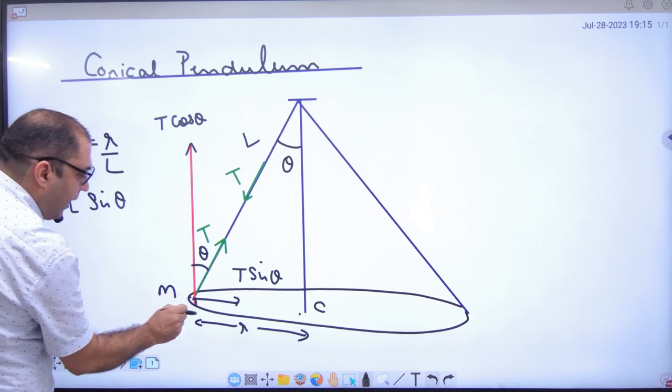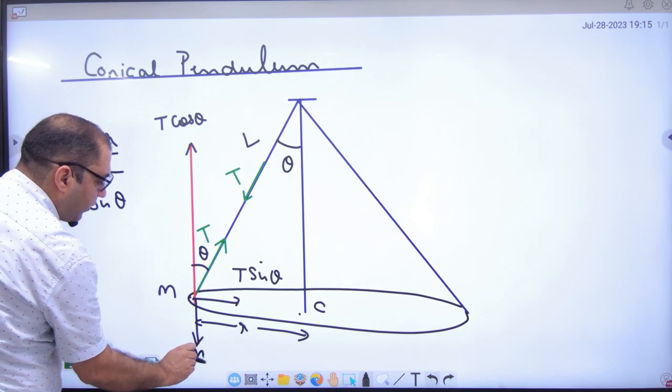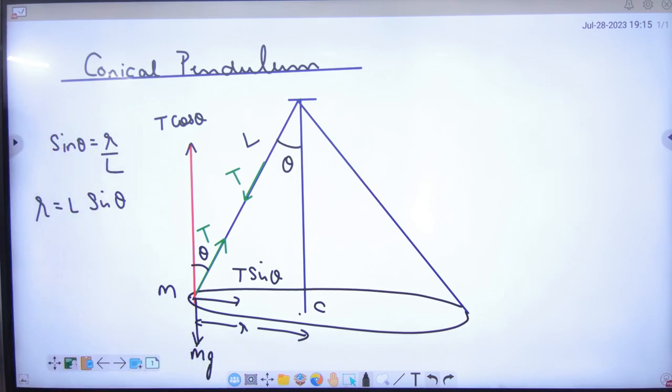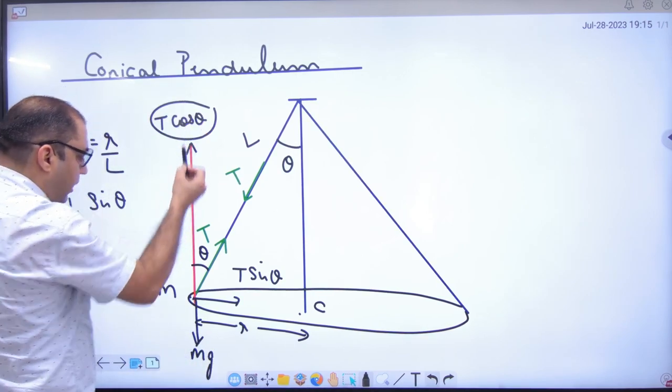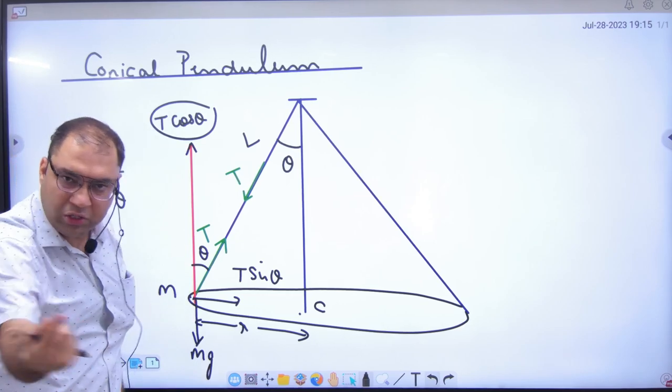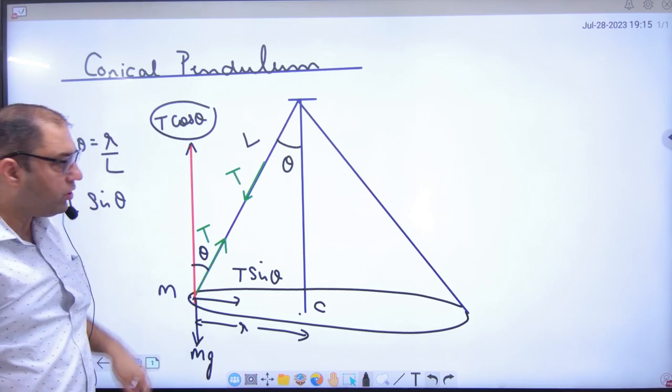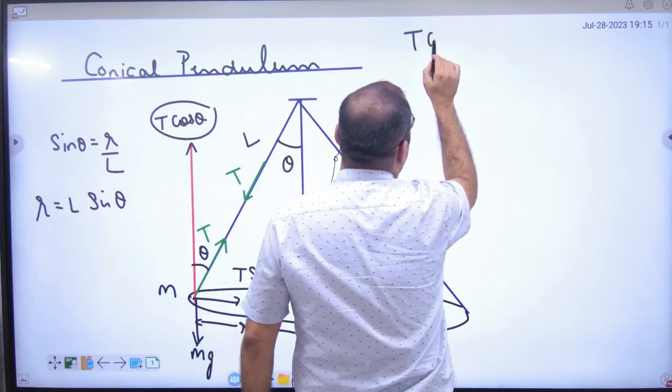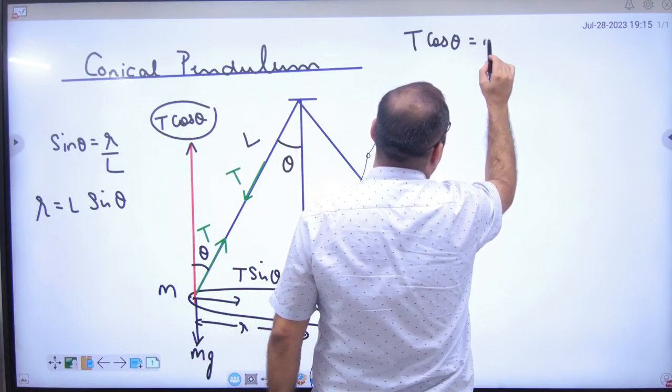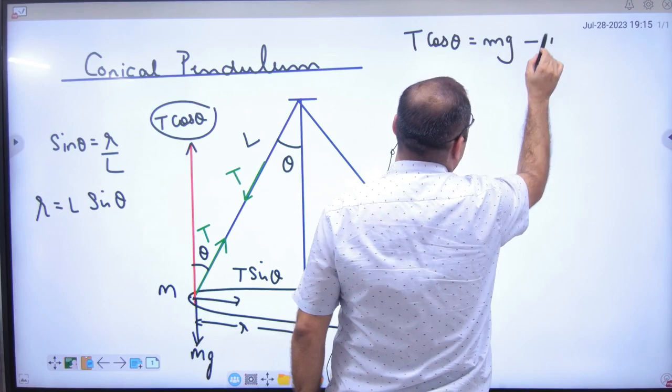T components - T cos theta downwards must be equal to Mg. Equation number one.